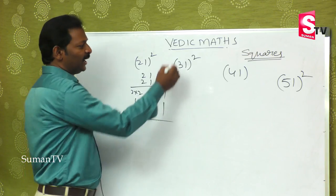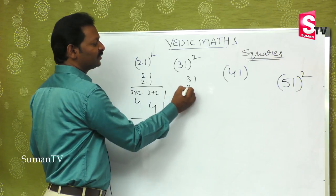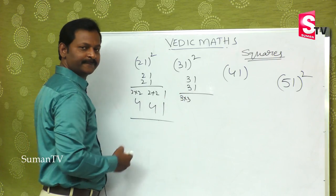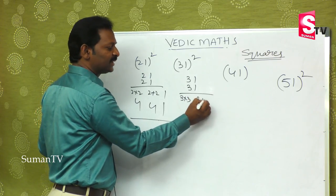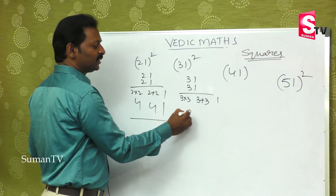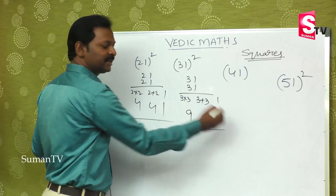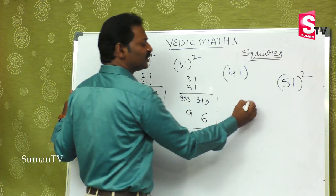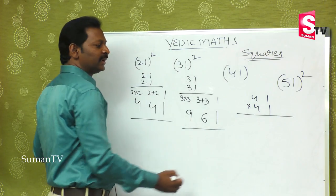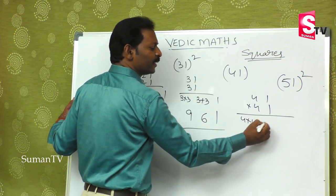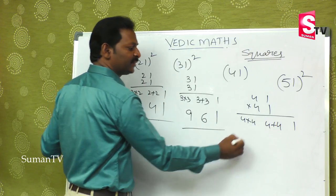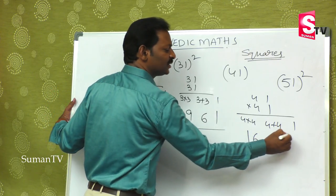For 41 into 41: first multiplication — 4 into 4 is 16, then addition — 4 plus 4 is 8, then 1. So the result is 16, 8, 1. The answer is 1681.